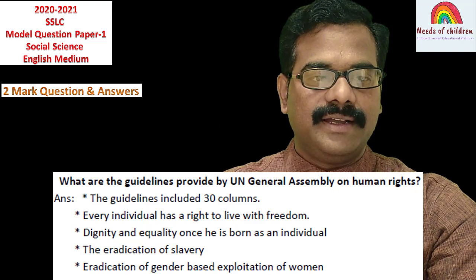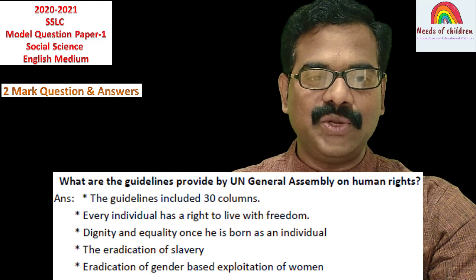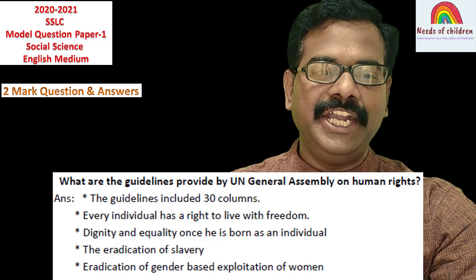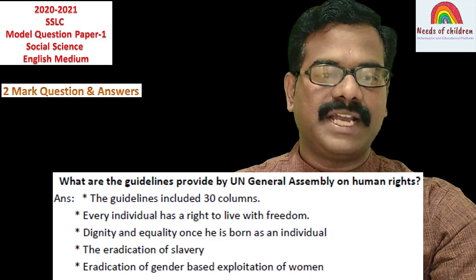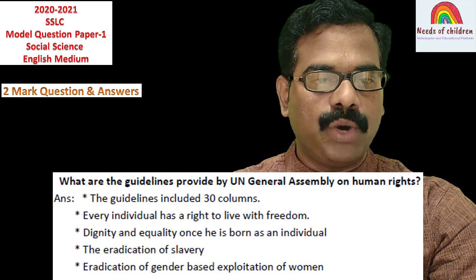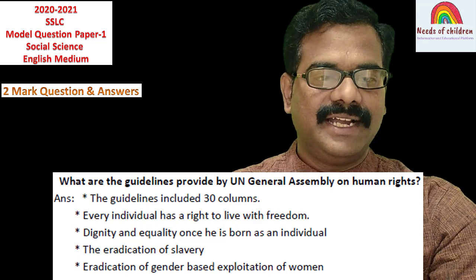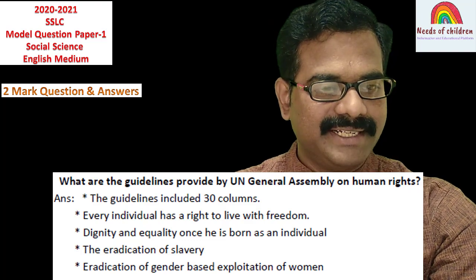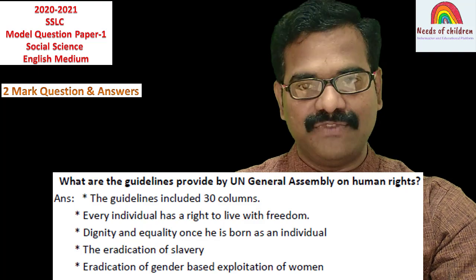The answer to 'What are the guidelines provided by the UN General Assembly on Human Rights?' is: Point 1 — the guidelines included 30 columns. Point 2 — every individual has a right to live with freedom. Point 3 — dignity and equality once born as an individual. Point 4 — eradication of slavery. Point 5 — eradication of gender-based exploitation of women.